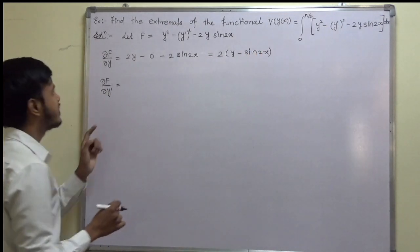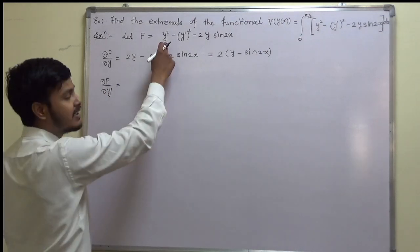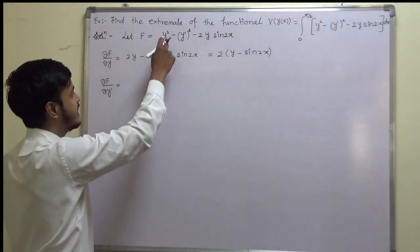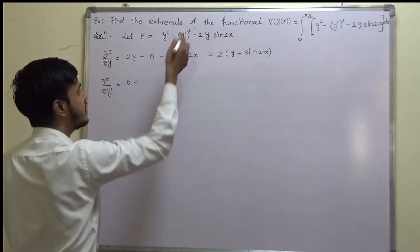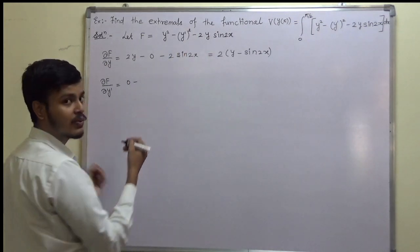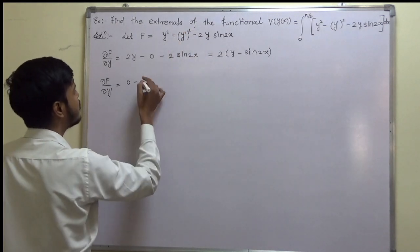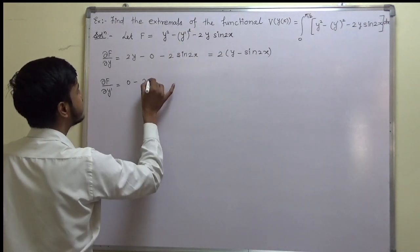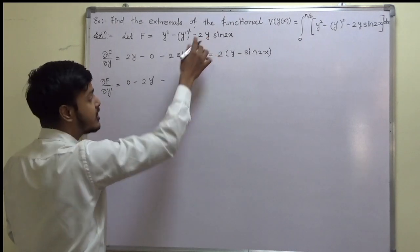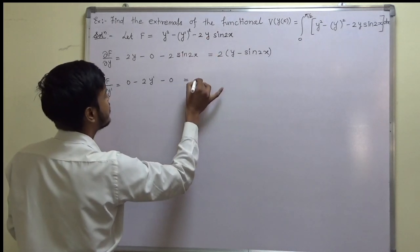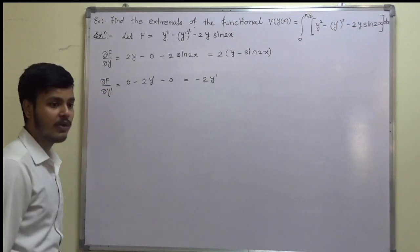Likewise, we find the derivative of f with respect to y'. Is there a term in y'? Yes — the term −y'². The derivative of y'² with respect to y' is 2y', so the derivative of −y'² is −2y'. There is no other term in y', so ∂f/∂y' = −2y'.